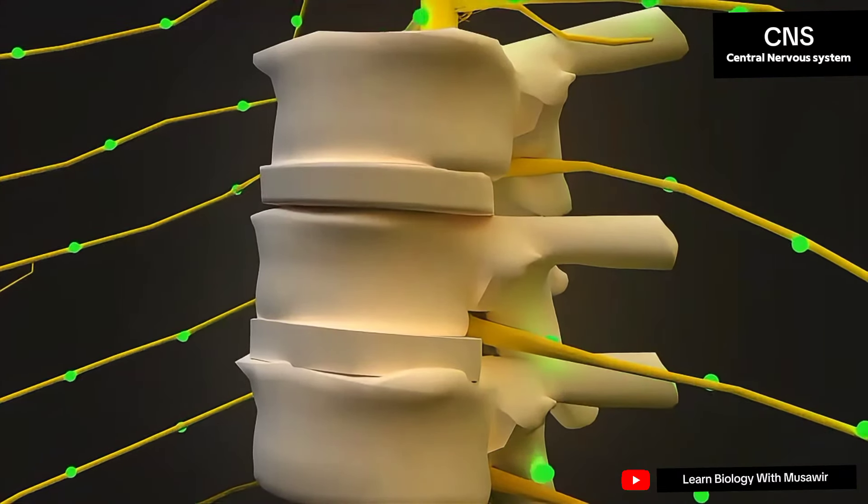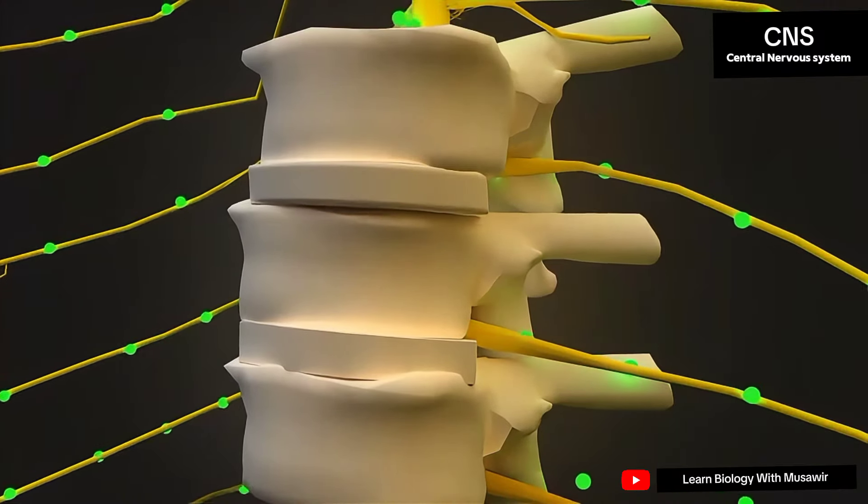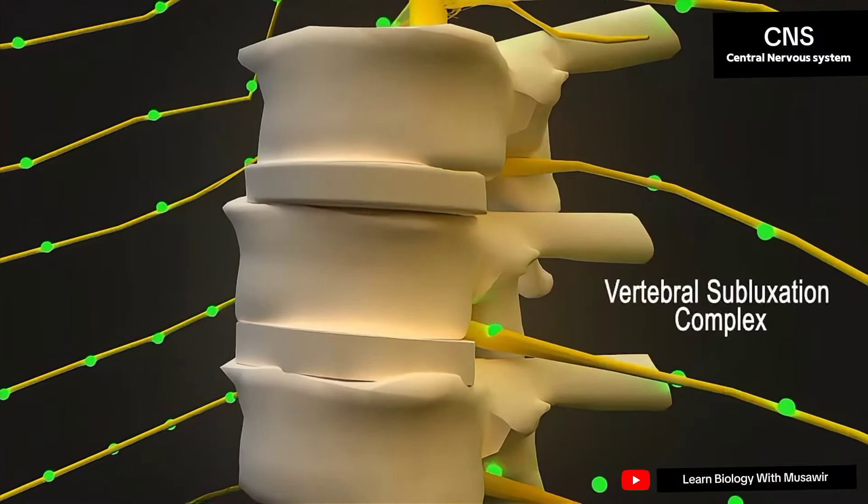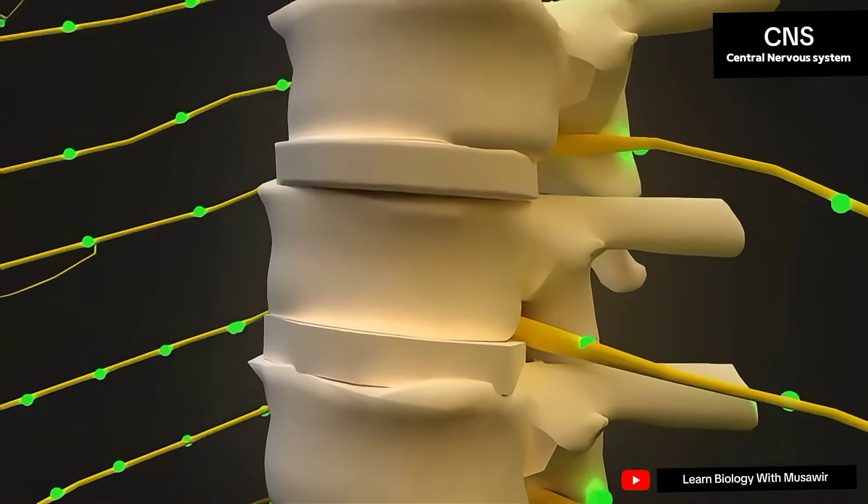However, from poor posture, falls, a car accident, or some other injury, your vertebrae can become misaligned. This misalignment is what chiropractors call vertebral subluxation complex, or just subluxation. When a subluxation occurs,